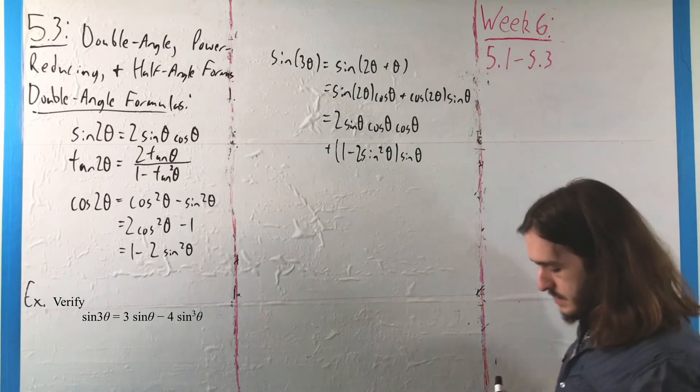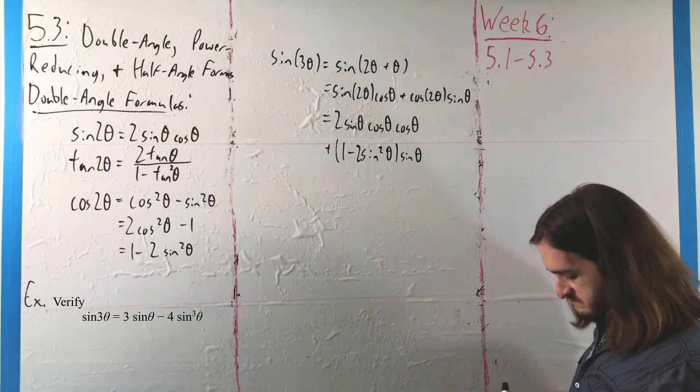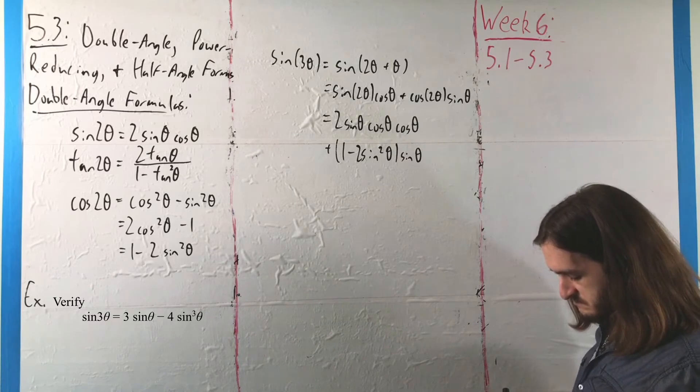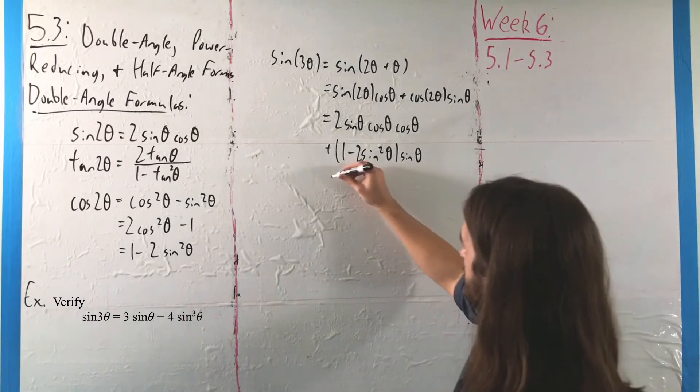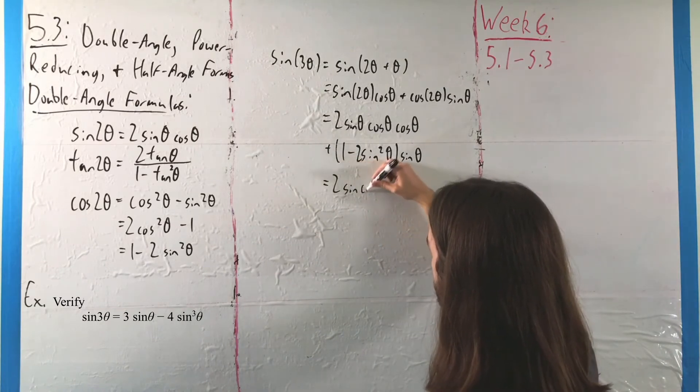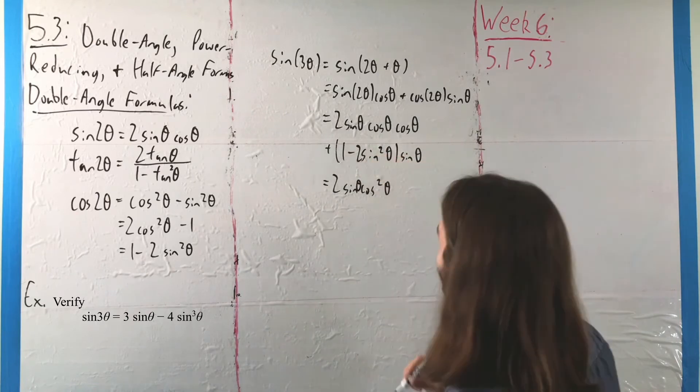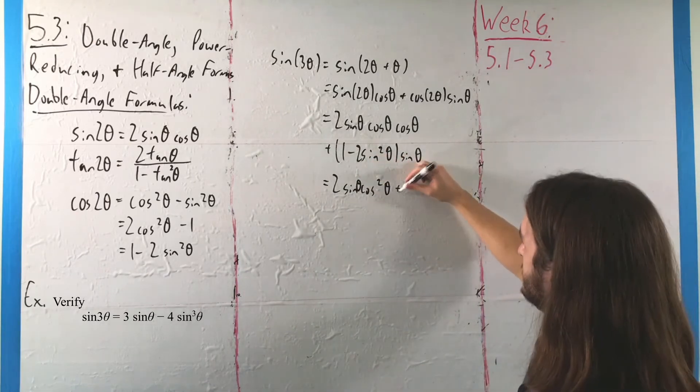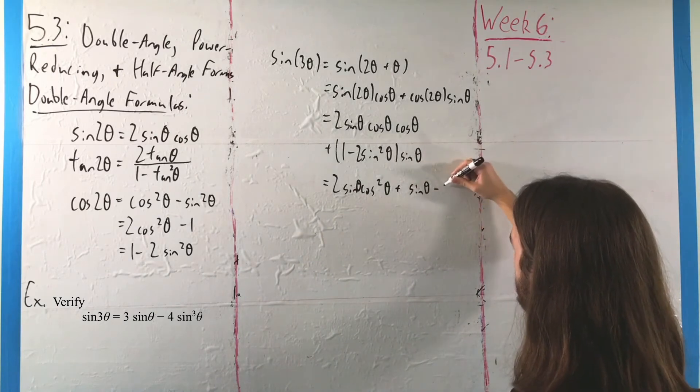sine of theta. And if we multiply this out, we get 2 sine of theta cosine squared of theta plus sine of theta minus 2 sine cubed of theta.